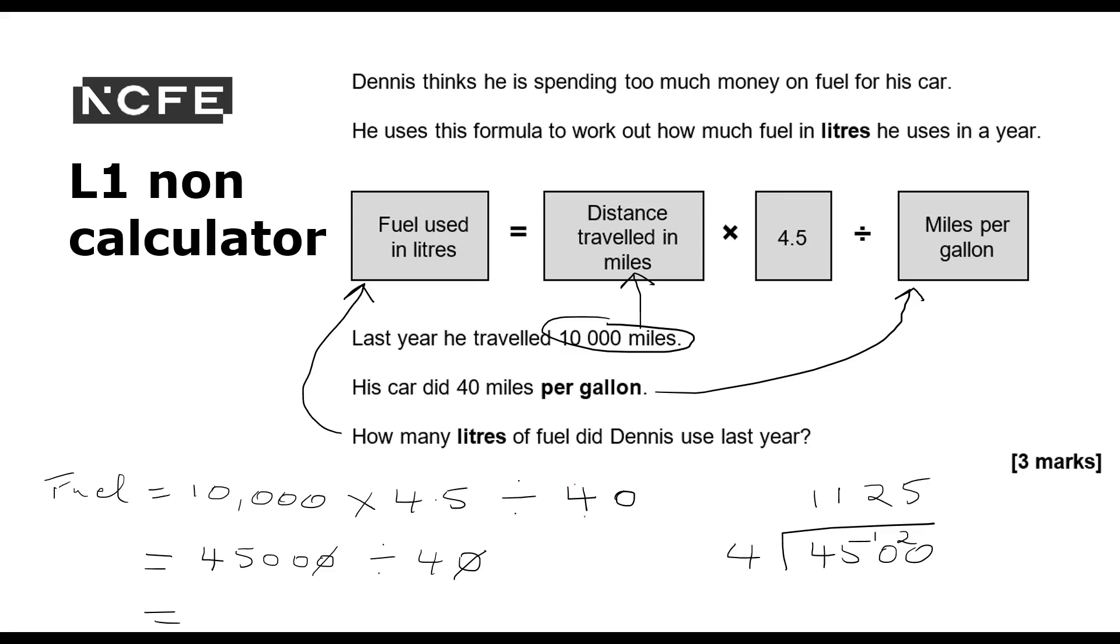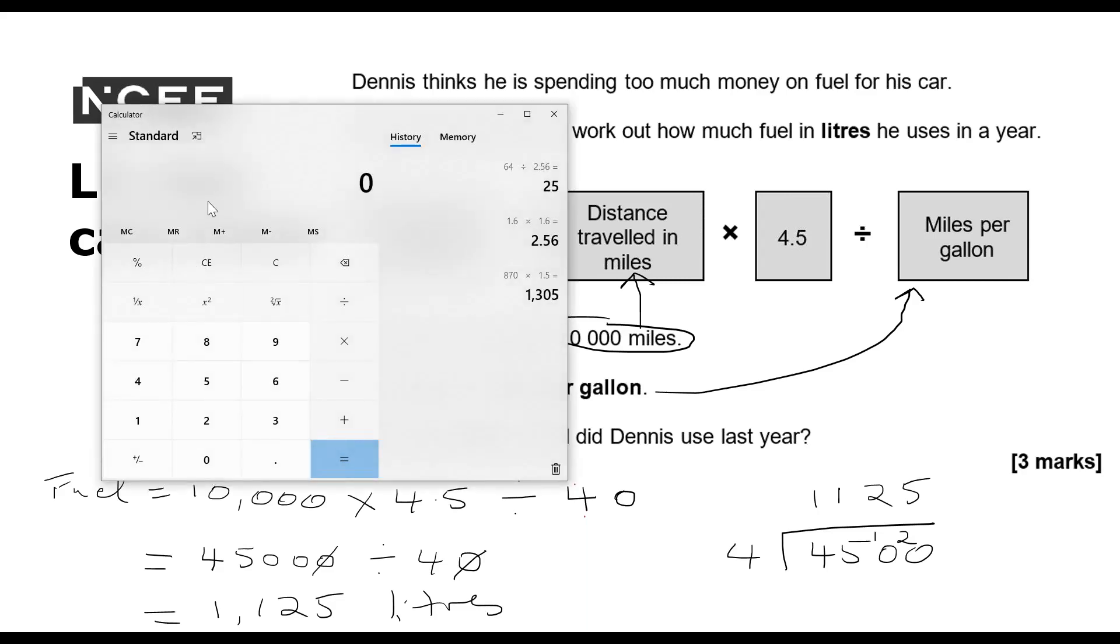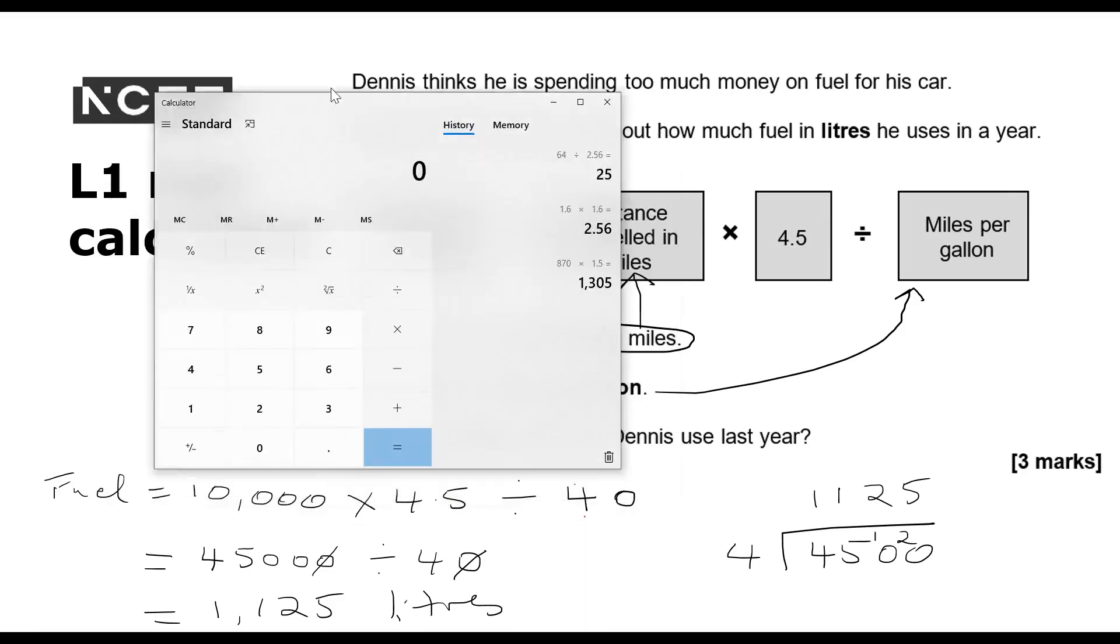So the fuel, how many litres of fuel did he use? He used 1,125 litres. And just to illustrate this, just because I feel like I did it in the wrong order there. What we should have done is 4.5 divided by 40 first. I didn't do that because it would have been tricky.